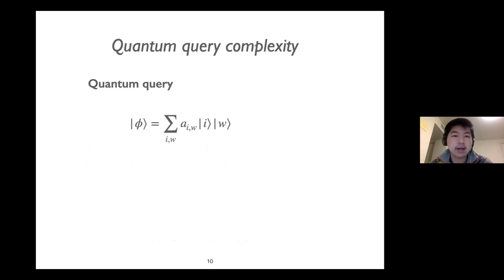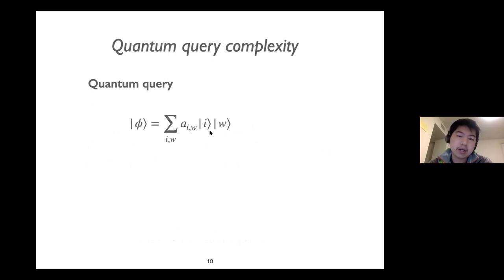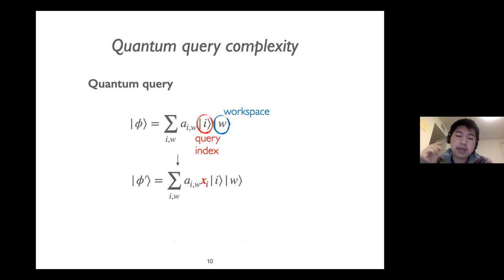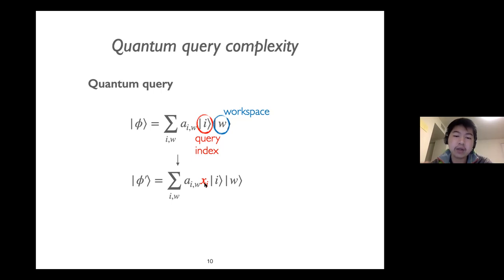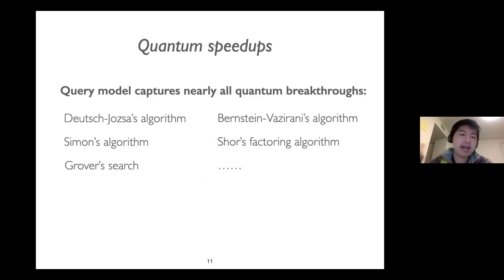That was the classical query algorithm. In a quantum query algorithm, we are able to make queries in superposition — we put the query indices in superposition, and as a result, in a single query, we are able to access all Xi. However, these values are stored in the amplitudes of the quantum states, so it is not immediately clear how we obtain the information we need. The query model captures nearly all quantum breakthroughs.